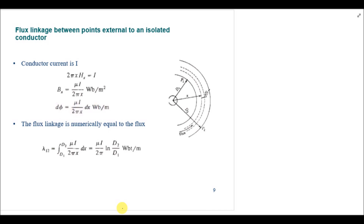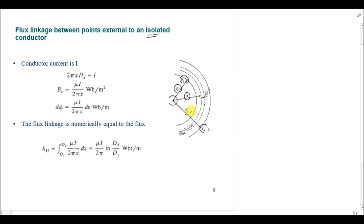In this case, like the last case, we are again considering an isolated conductor, meaning the return conductor is very far away from the conductor under consideration, so there is no magnetic field interaction between the two conductors. We are considering a tubular element at a distance X from the conductor, and also two points P1 and P2 at distances d1 and d2 outside the conductor respectively.